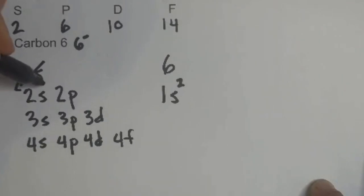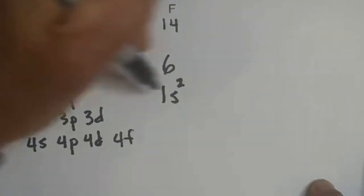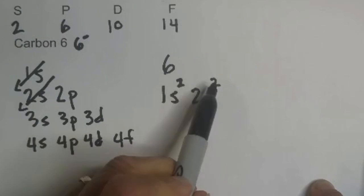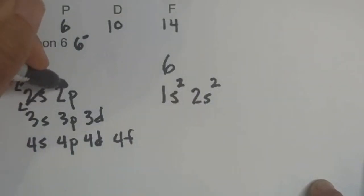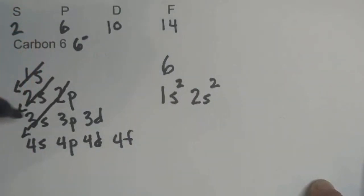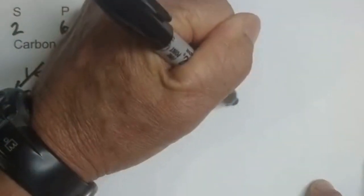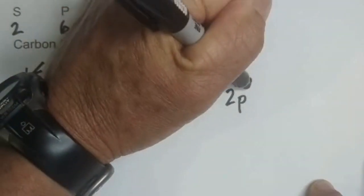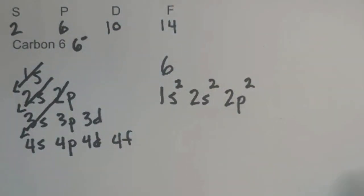Now we start at the second energy level, draw an arrow like this. We now have 2s². Remember we're getting to 6, right now we have 4, so we're going to go to 2p. Since it only has 6 electrons, you're only going to have 2 right there.